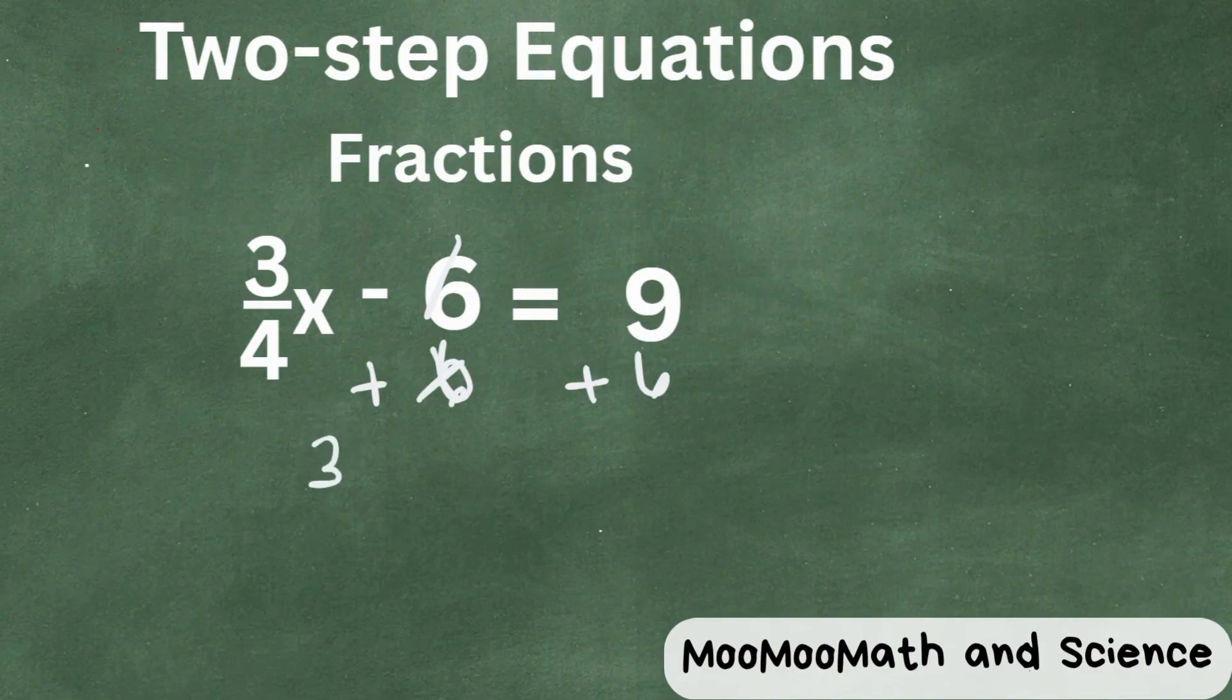Let's bring down the 3 fourths x equals, and 9 plus 6 is 15. So now what do we do with this fraction? Well, basically it's saying it's 3 fourths times x. So we need to complete the inverse operation.